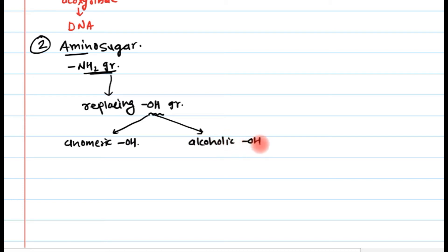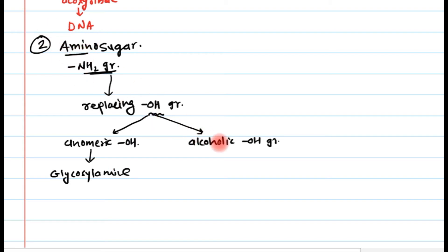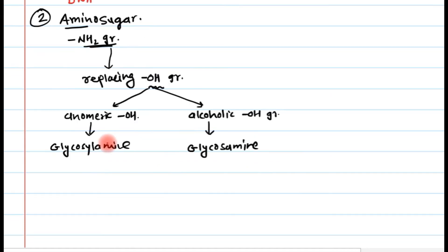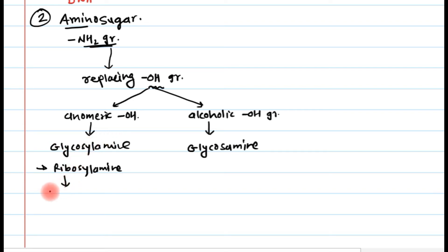If the amino group replaces the anomeric OH group, that sugar is known as a glycosylamine. If the NH2 group replaces the alcoholic OH group, it is known as a glycosamine. An important example of a glycosylamine is ribosylamine, which is an intermediate in the synthesis of purines.